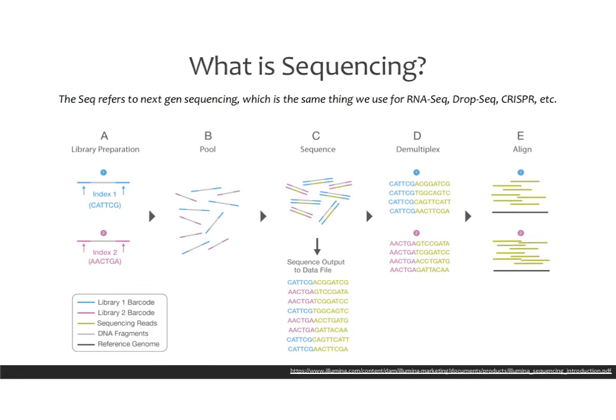The final piece of understanding CHIP-seq is that sequencing refers to next-generation sequencing — the same kind used for RNA-seq, drop-seq, CRISPR, etc. The basic idea is that you send a DNA sample, that sample is fragmented, sequenced, and then realigned. This process is usually done by a sequencing core using Illumina machines, and while you should understand it, it's usually not something you will do yourself.